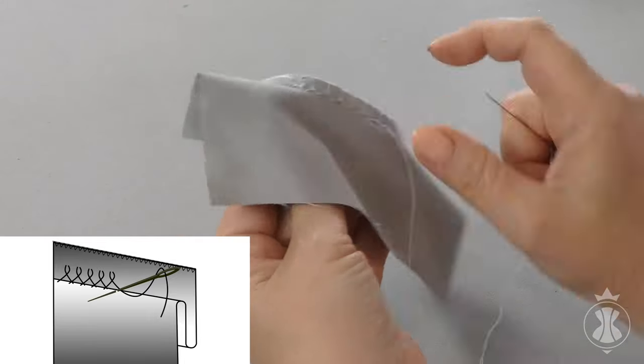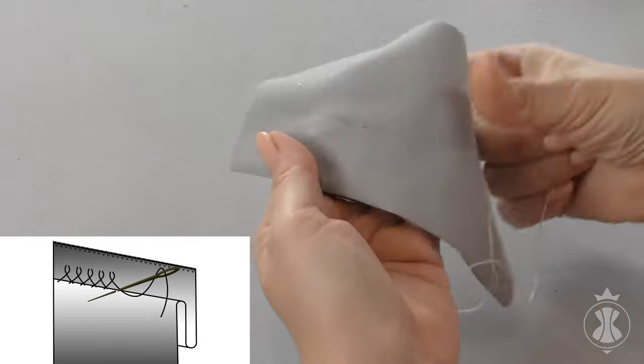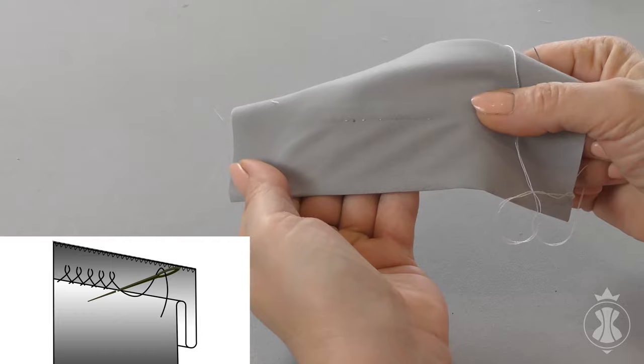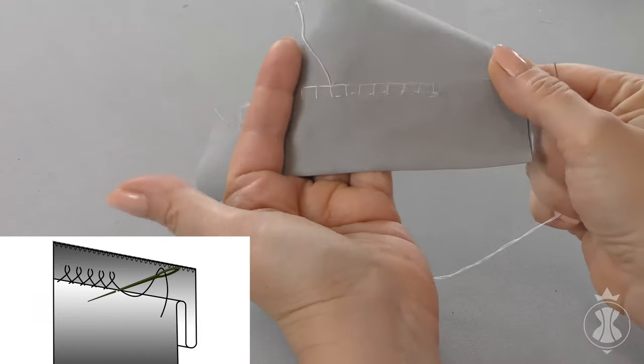There are usually 3-4 stitches per centimeter, each stitch being 3-4 millimeters long.